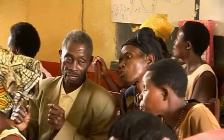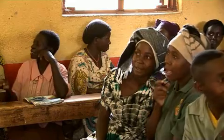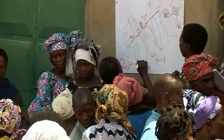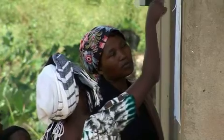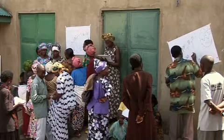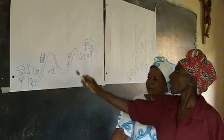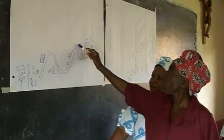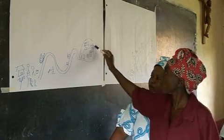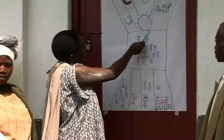The training is fully participative and is based on the use of the GALS tools. The Gender Action Learning System methodology, used by both organisations, includes a set of four main tools: road journeys, maps, trees, and diamonds.